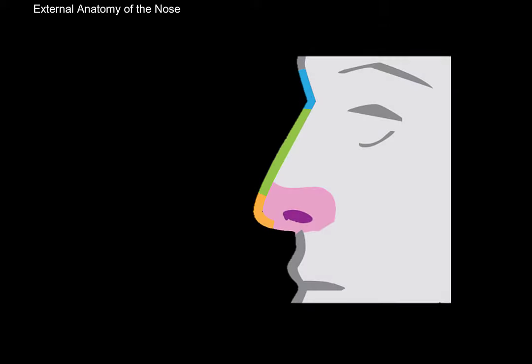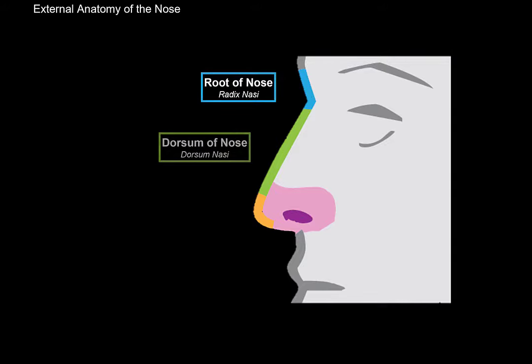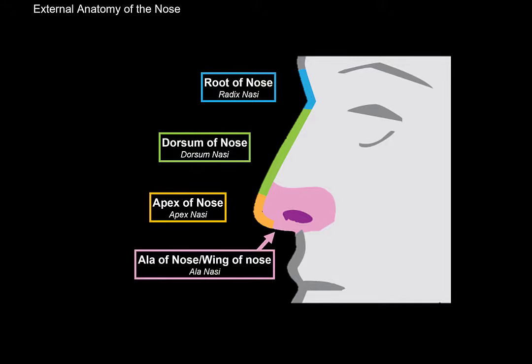Here you see a side view of the nose. There are actually anatomical names to each of the segments of the external nose, and here each are separated by color. So we have the root of the nose, the radix nasi. Then we have the dorsum of the nose, and an apex. And then laterally, we have the wings of the nose, or ala nasi, which go around the nostrils.